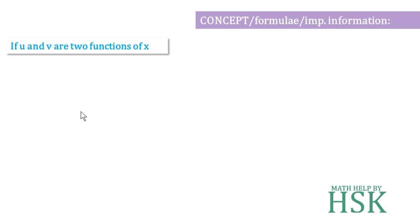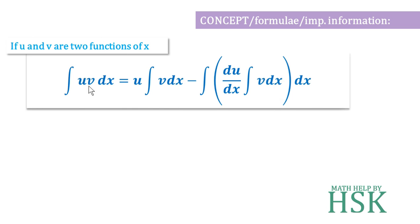then the integration of the product of these two functions u·v with respect to x is given by: u into integration of v, minus integration of (differentiation of u into integration of v).